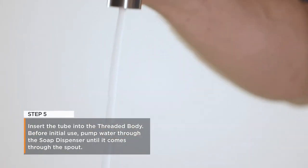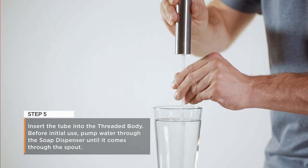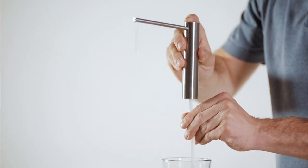Step 5: Insert the tube into the threaded body. Before initial use, the soap dispenser must be primed. To do this, pump water through the soap dispenser until it comes through the spout.